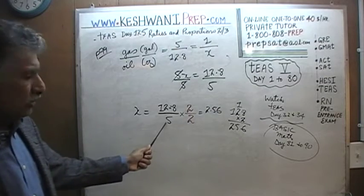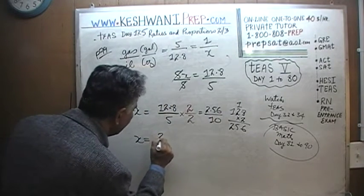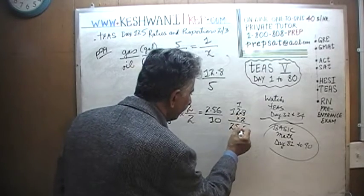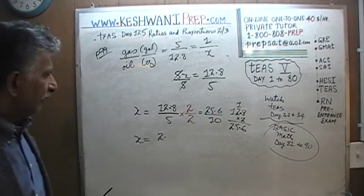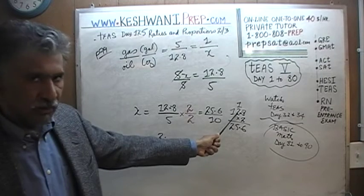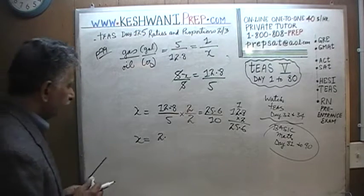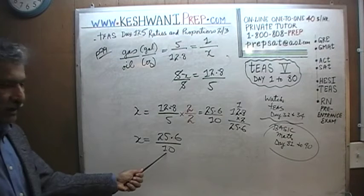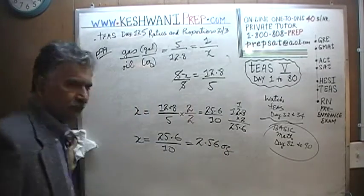12.8 times 2 is 25.6 — not 2.56, the decimal is after the first digit, giving 25.6. And the denominator is 5 times 2, which is 10. So we get 25.6 over 10. When you divide by 10, you just move the decimal one space, and the answer is 2.56 ounces.